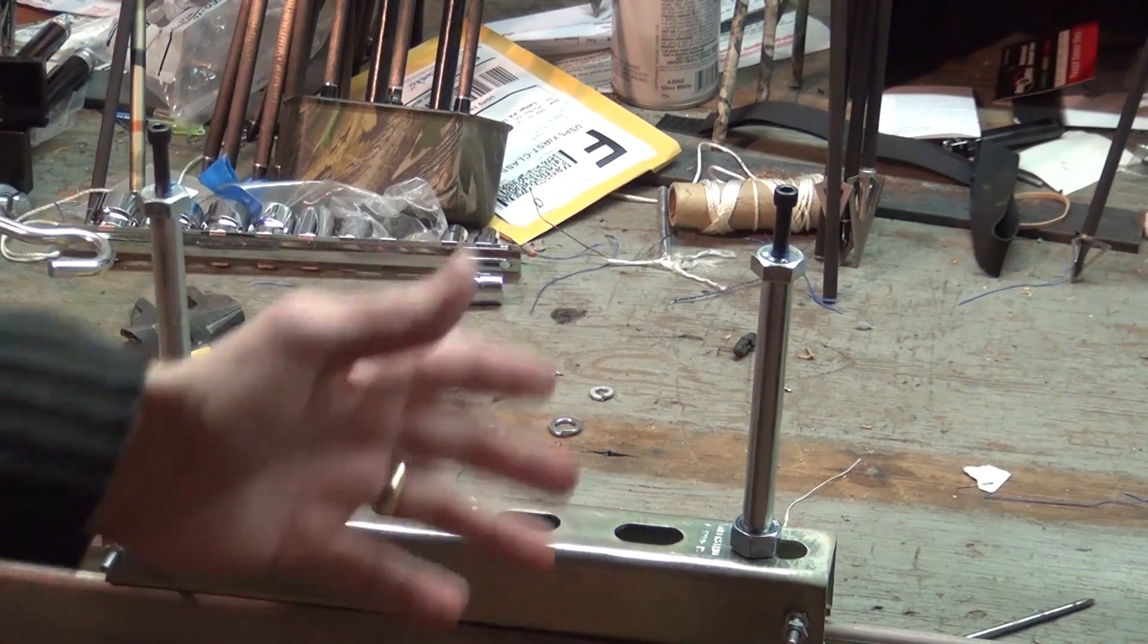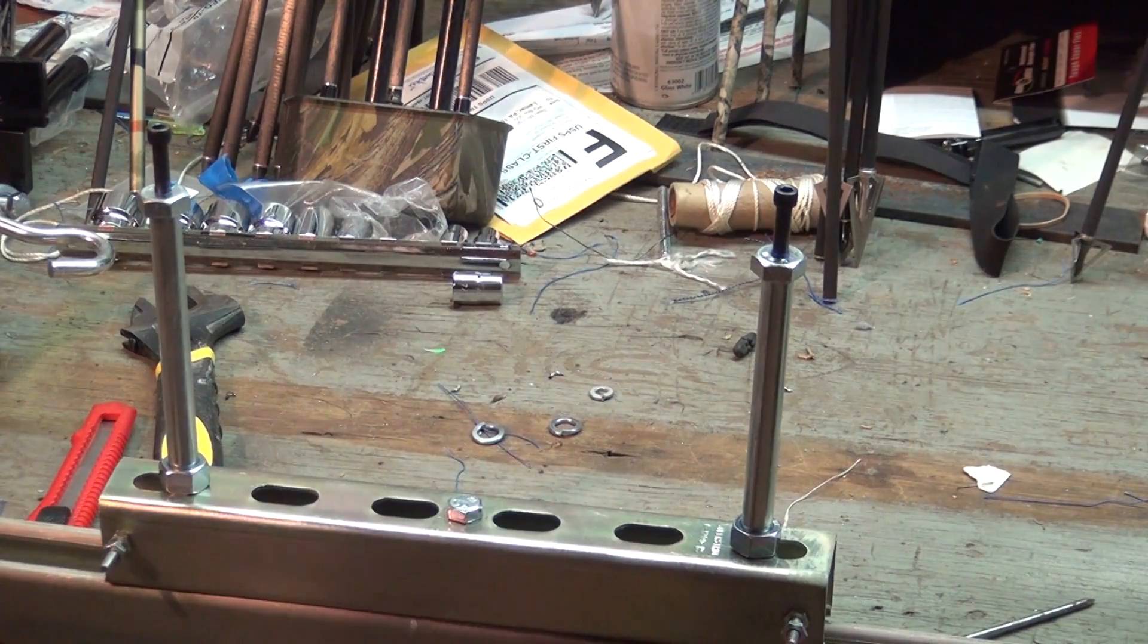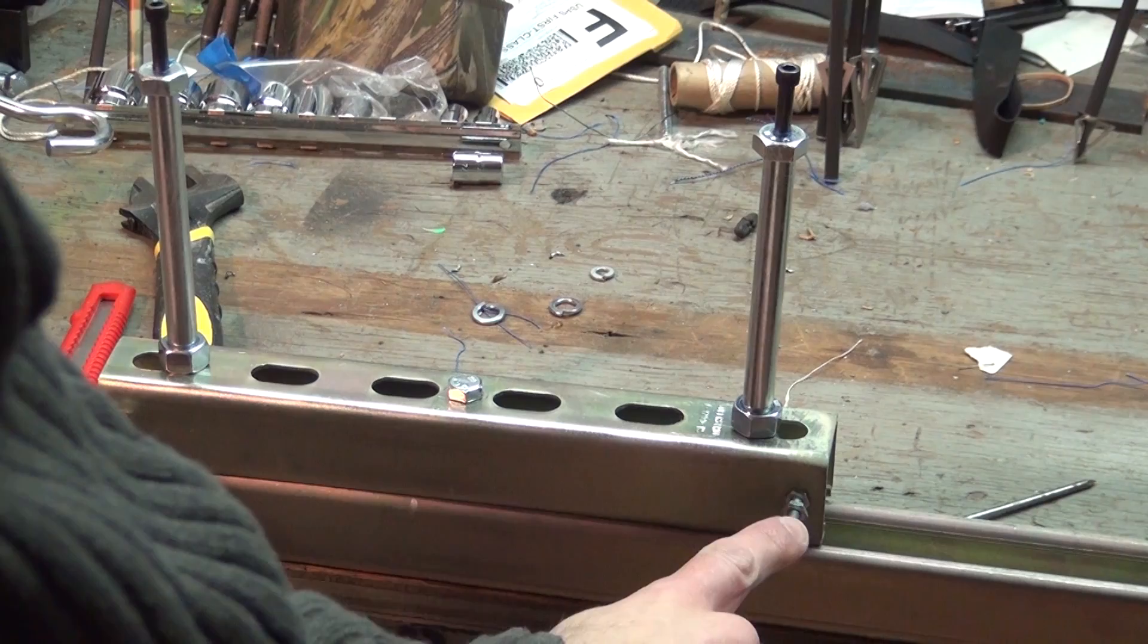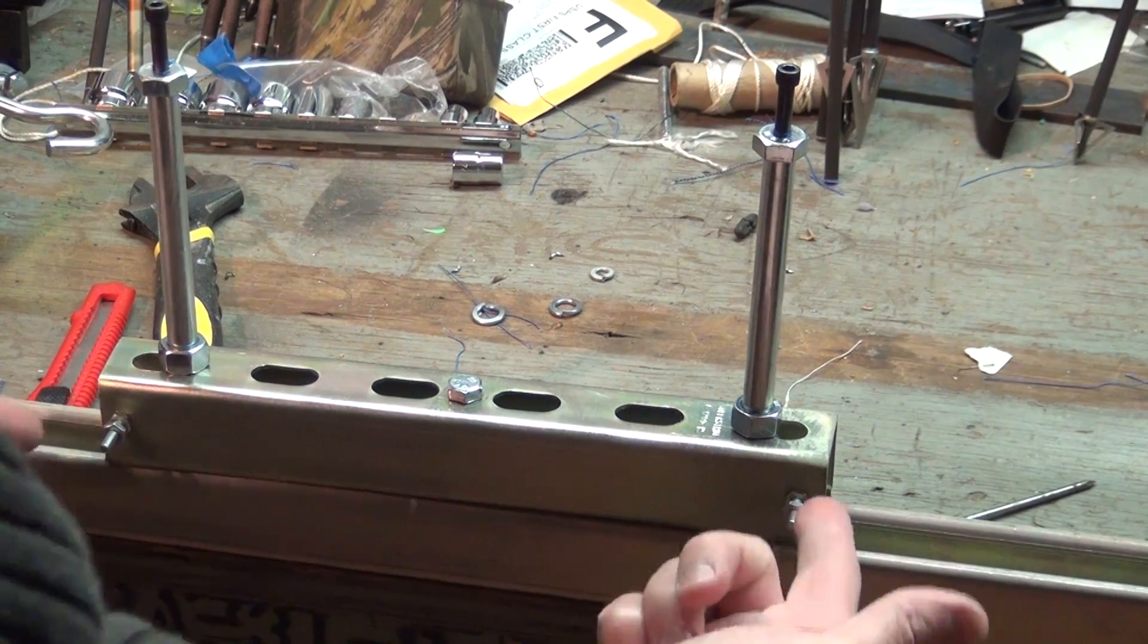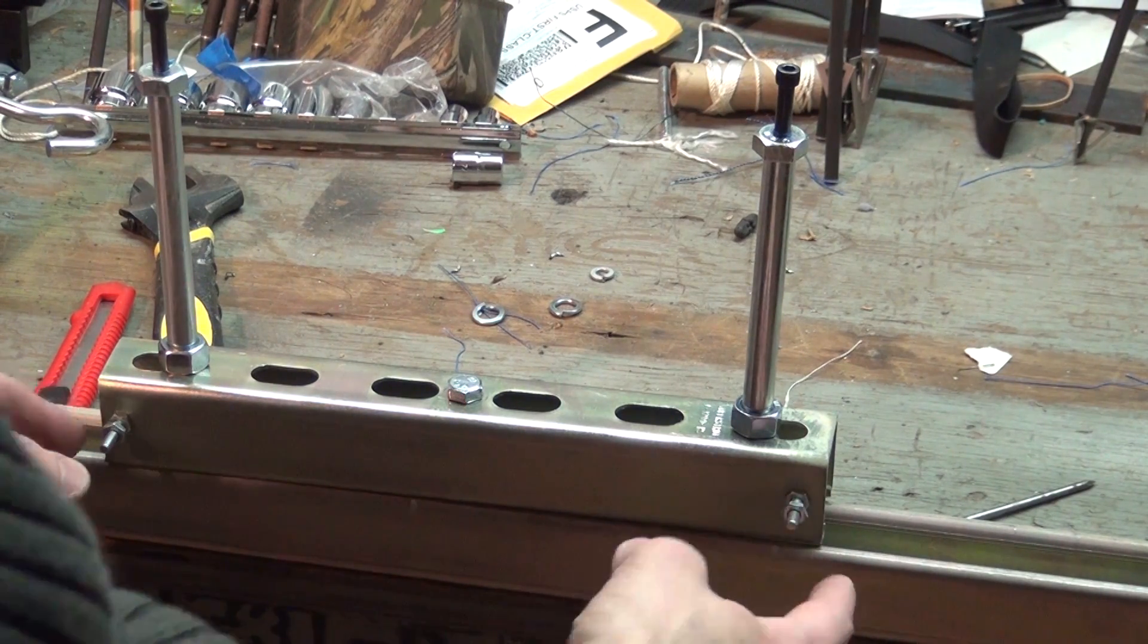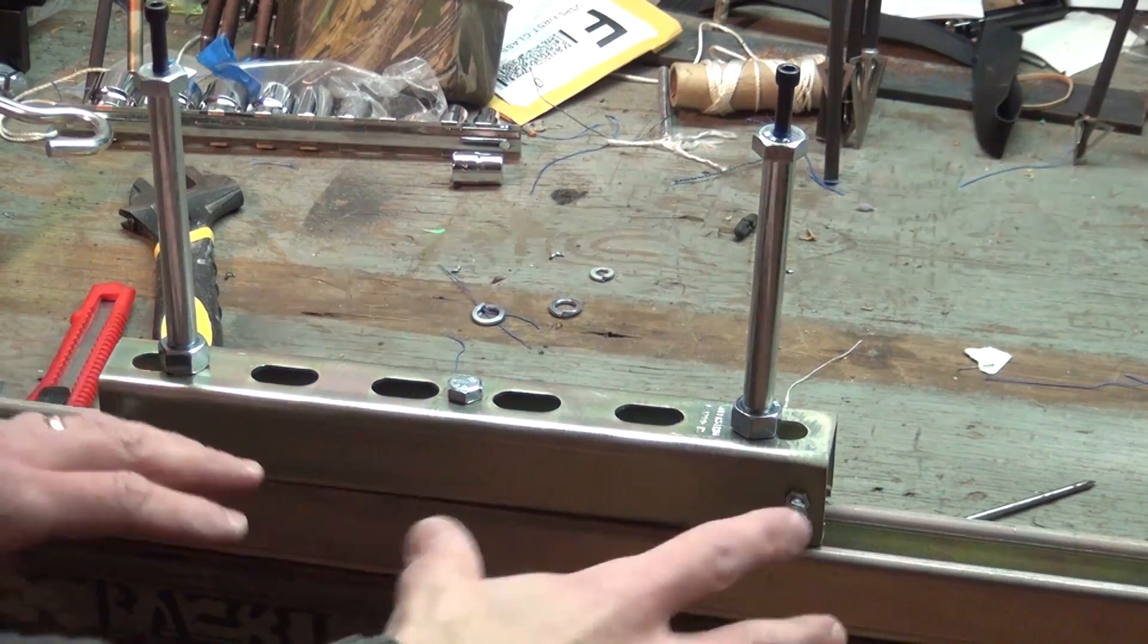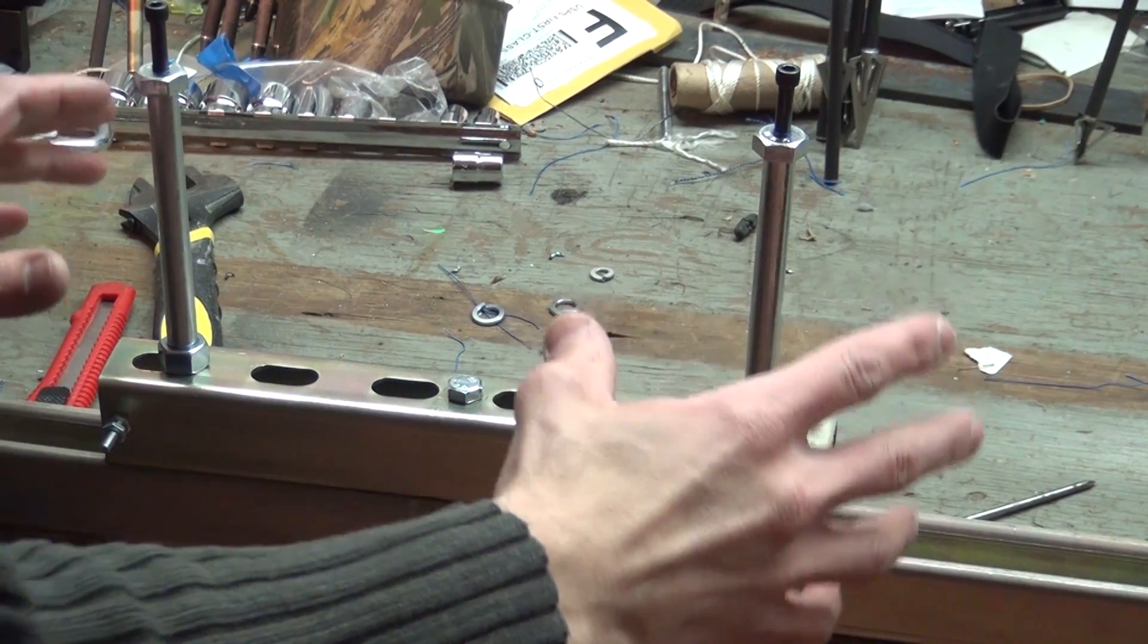So those have created my posts for the string jig. Now on one end of the string jig I just drilled a hole and put these screws through, and this is for when you're starting to make your string.